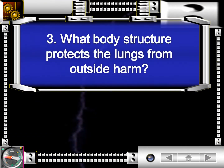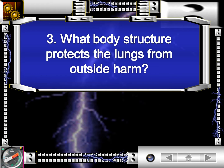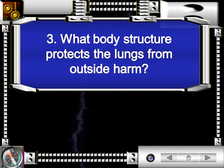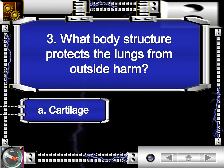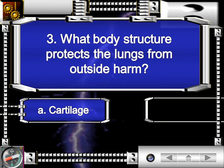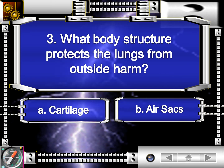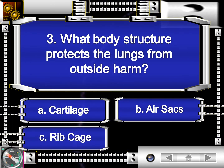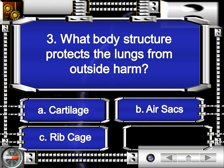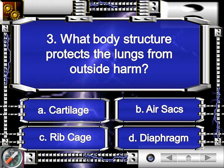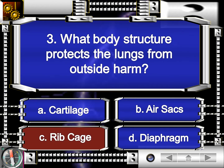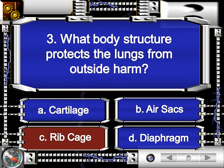For our third question. What body structure protects the lungs from outside harm? Letter A, cartilage. Letter B, air sacs. Letter C, ribcage. Or letter D, diaphragm. The answer is letter C, ribcage.